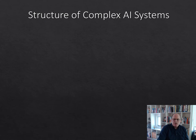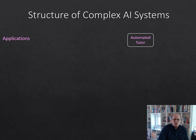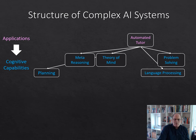I want to start off talking about the structure of complex AI systems. At the highest level, we can think of a task we're trying to achieve that we expect is not going to be a trivial task, but something like an automated tutor. In order to do that, we expect that we're going to be using lots of different aspects of AI — what we call cognitive capabilities — things like planning, having a theory of mind of what the student is, some meta reasoning about the student's reasoning, and some problem solving and language processing.